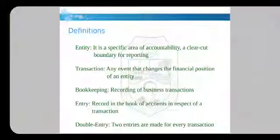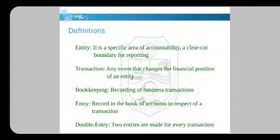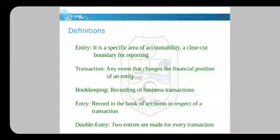These are a few definitions. First is entity. It is a specific area of accountability, a clear-cut boundary for reporting. For example, a firm. Let's say a firm is one entity of which we are going to keep an account.